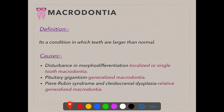The next cause is pituitary gigantism, a systemic condition that results in true generalized macrodontia. The third cause is Pierre-Robbins syndrome and cleidocranial dysplasia, both genetic disorders. Cleidocranial dysplasia is a skeletal dysplasia characterized by abnormality or absence of the collarbone, and in either case the jaw is relatively small — micrognathia — so the macrodontia associated with this condition is relative generalized macrodontia.